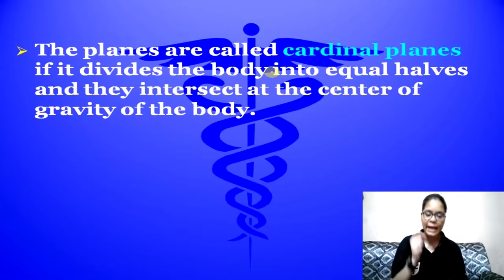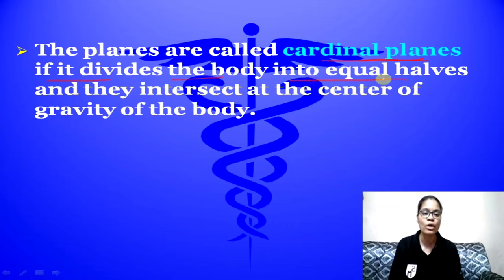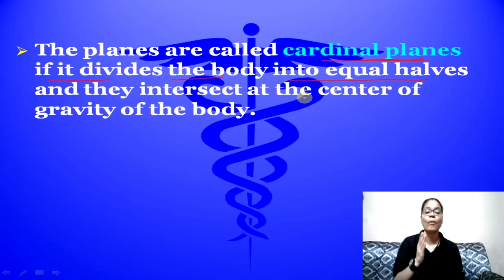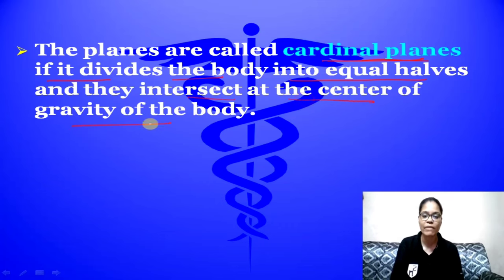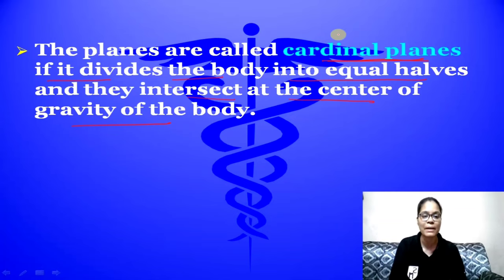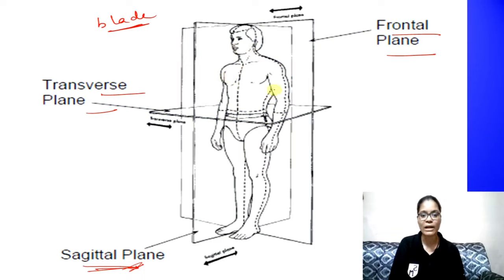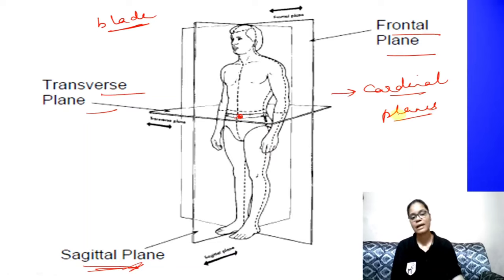Very, very, very important — there is another category called Cardinal planes. What are Cardinal planes? If the plane divides the body into two equal halves, and specifically if it intersects at the center of gravity, then it will be called a Cardinal plane. Otherwise, if it does not pass through the center of gravity, it will be called a simple plane, not a Cardinal plane.